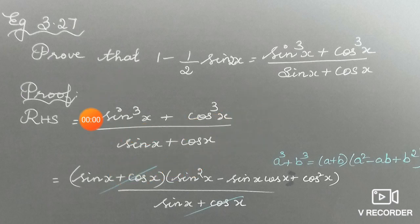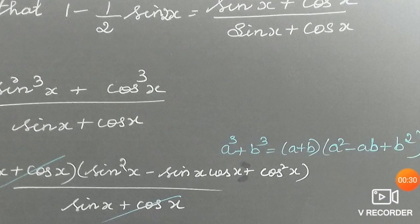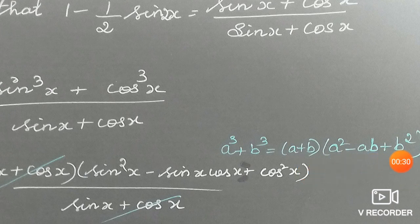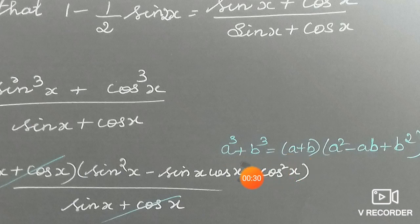And see the numerator, it is in the form of a cube plus b cube. Other identity, let us know, a cube plus b cube is a plus b into a square minus ab plus b square. In the place of a, we have sin x and in the place of b, we have cos x.